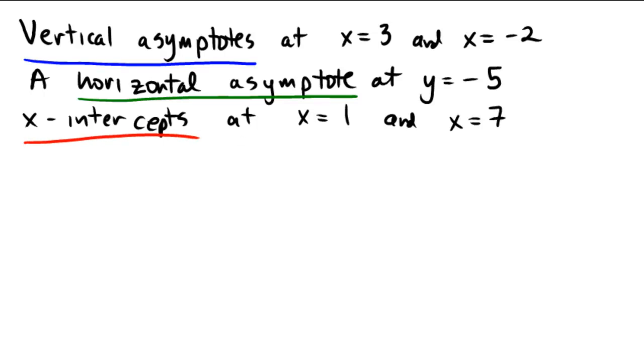So as I try to set this up, let's go y equals the vertical asymptotes are going to have to be quantities in the denominator, so we want a vertical asymptote at x equals 3, and we want a vertical asymptote at x equals negative 2, so that's going to give me my vertical asymptotes.